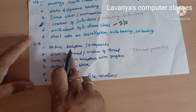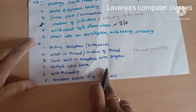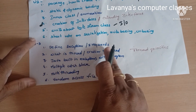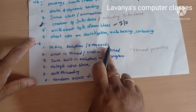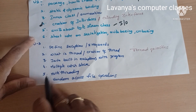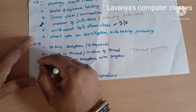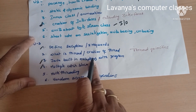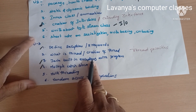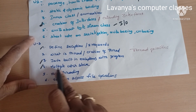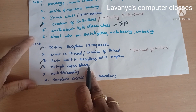In Unit 3, two chapters are covered: exceptions and threads. Define exception, what are the five keywords used in exceptions, and Java built-in exceptions — explain built-in exceptions with programs. Also explain multiple catch block statements.